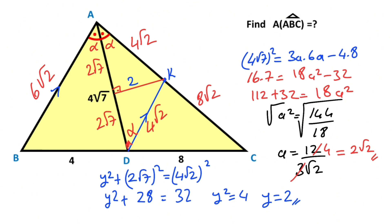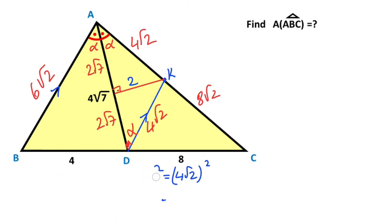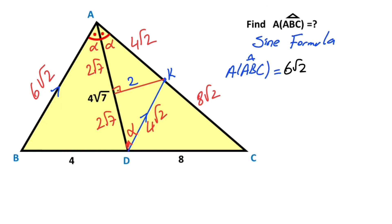After this we can find the area using either the sine formula, Heron's formula, or other methods, but I want to use the sine formula. According to the sine formula, the area of triangle ABC is equal to this length, 6√2, times this length, 12√2, divided by 2, times sine 2α.